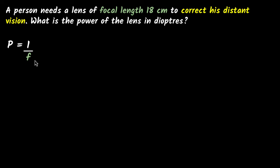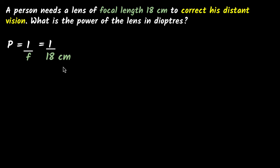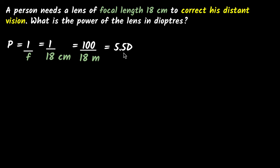Power is one over focal length. So if you just substitute, you'll get one over 18. But remember, to calculate in diopters, I have to convert this into meters. You just divide by 100, so the 100 goes on top and I get 100 divided by 18 meters. If I do this calculation, I get 5.5 meter inverse, which is diopters.